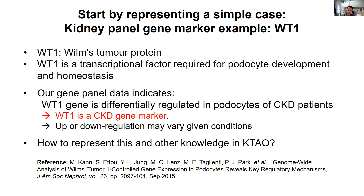WT1 is a tumor protein that is a transcriptional factor required for podocyte development and homeostasis. In our community gene panel, we identified it as a CKD gene marker — a chronic kidney disease gene marker that can be regulated in podocytes. Sometimes we find it upregulated, sometimes downregulated, and we feel there can be other factors determining this. The question becomes: how can we represent this information in KTAO?